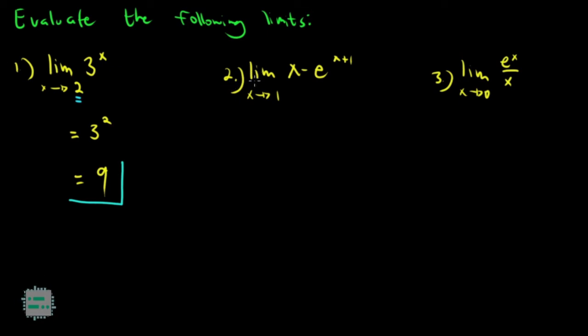Sa example 2 natin, we have to evaluate the limit of X minus E raised to X plus 1. Yung E dito ay isang mathematical constant. Tawag natin dyan ay Euler's constant. Pero hindi naman natin kailangan alaman o i-plugin yung value nun. Simplify lang natin yung expression if possible. And then, we plug in the value that X is approaching sa lahat ng X ng ating function. So, if X approaches 1 here, we actually have 1 minus E raised to 1 plus 1. Simplify natin yung exponent ni E. This is now E squared. So, hindi na natin pwedeng isubtract si E squared mula kay 1. Dahil hindi na nga natin ipo-plugin yung value nung constant na to. So, tanggapin na natin to bilang ating final answer.